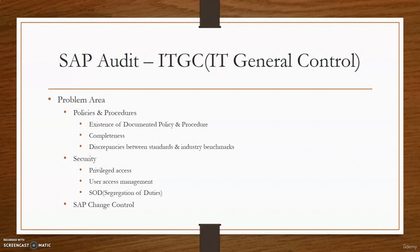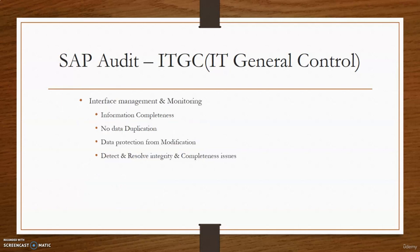The next area is SAP change control. No matter what type of SAP audit you encounter, some level of change control assessment is usually part of the procedure. Change control refers to the process for initiating, creating, reviewing, and approving changes to the SAP application and related infrastructure. We should remove unnecessary programmer access from production so they cannot bypass the change management route. We should use standard change request forms, maintain a pre-transport checklist for emergency changes, and develop test plans commensurate with the complexity of the change before going live.